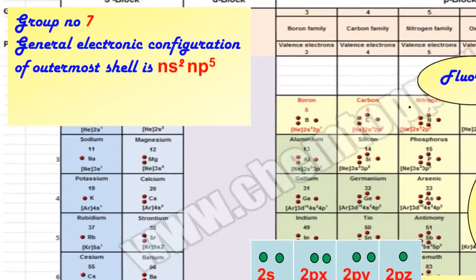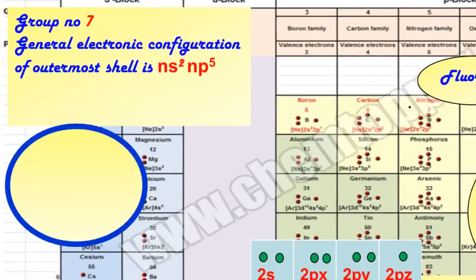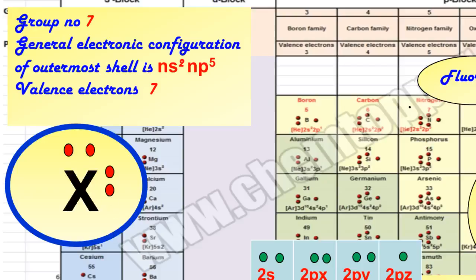All group seven elements with general electronic configuration of ns² np⁵ with valence electrons of seven are represented with the symbol X and seven valence electrons around the symbol, in which six electrons are present as pairs and one electron is present as an unpaired electron.